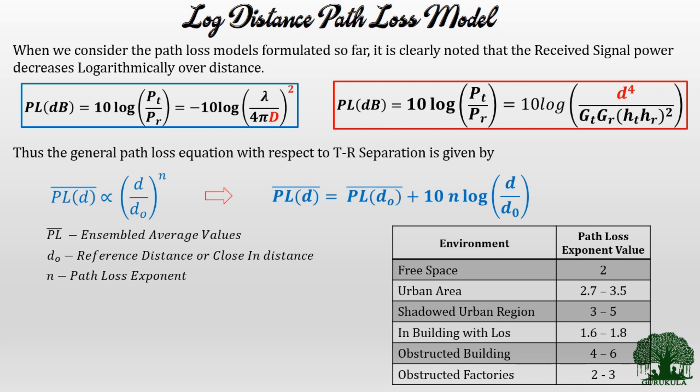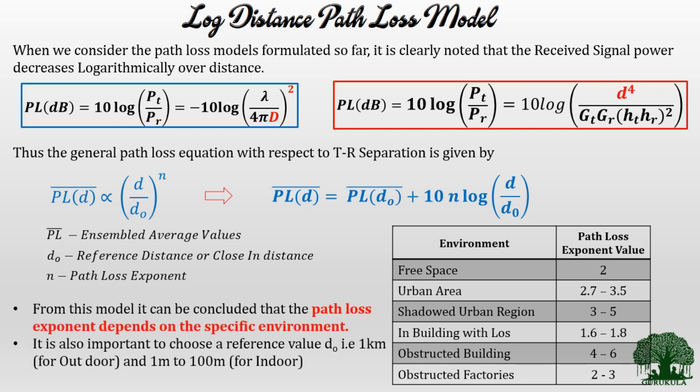This model was developed using the analytical approach and then experimented in different environments to find the n value for each environment. A table summarizes the results: in free space the path loss exponent is 2, which satisfies the known equations. In some urban areas it is 2.7 to 3.5, in shadowed urban regions 3 to 5, in buildings with line-of-sight communication 1.6 to 1.8, in obstructed buildings 4.6, and in obstructed factories 2 to 3.